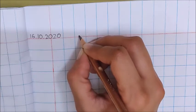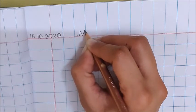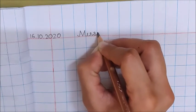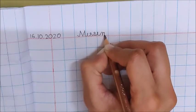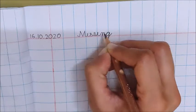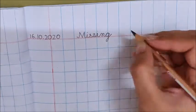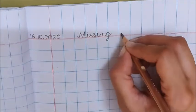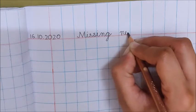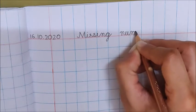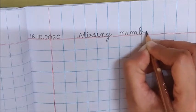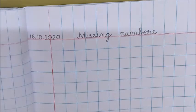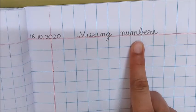M-I-S-S-I-N-G, missing. Now leave one finger space and write down your numbers. N-U-M-B-E-R-S. Missing numbers.